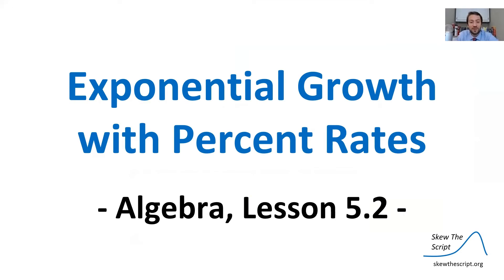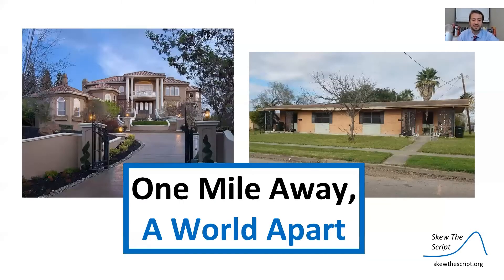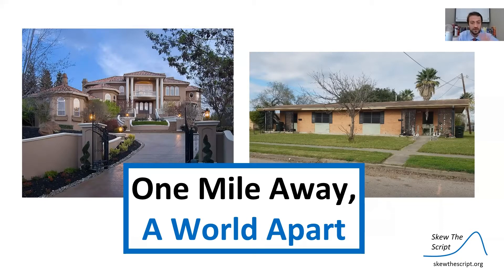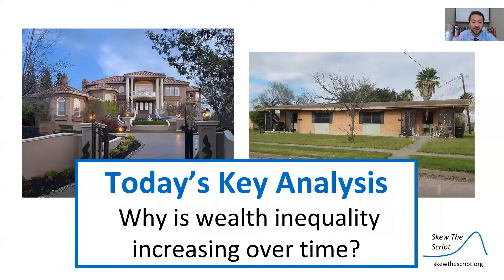Welcome to lesson 5.2 in our Skew the Script algebra series, today discussing exponential growth with percent rates. Consider these two houses. While they are located just a mile away, it's clear that the wealth behind these two houses are a world apart. This sort of wealth inequality occurs very frequently in our society and in recent years has actually been increasing. Our key analysis today is asking the question: why is wealth inequality increasing over time?